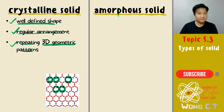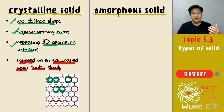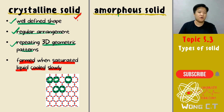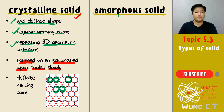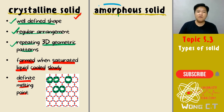That is what we call crystalline solid. Crystalline solid forms when the saturated liquid cools very slowly. When your saturated liquid undergoes the cooling process very slowly, you will be forming your crystalline solid. And because of this regular arrangement and well-defined shape, your crystalline solid will have a definite melting point — the melting point will be very definite.